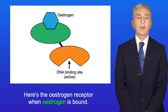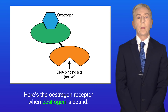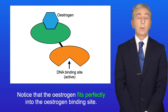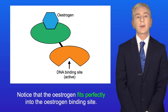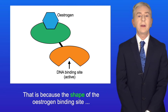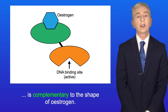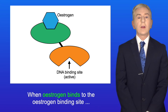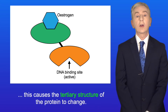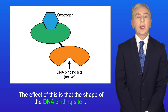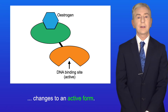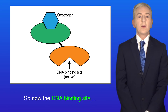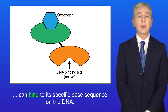Here's the oestrogen receptor when oestrogen is bound. Notice that the oestrogen fits perfectly into the oestrogen binding site because the shape of the oestrogen binding site is complementary to the shape of oestrogen. When oestrogen binds to the oestrogen binding site this causes the tertiary structure of the protein to change, and the effect of this is that the shape of the DNA binding site changes to an active form, so now it can bind to its specific base sequence on the DNA.